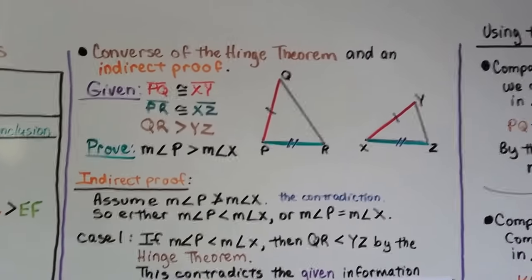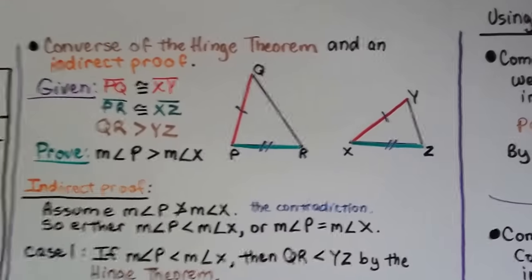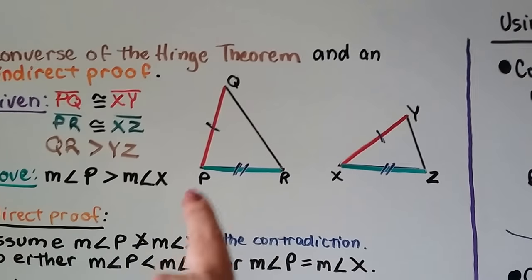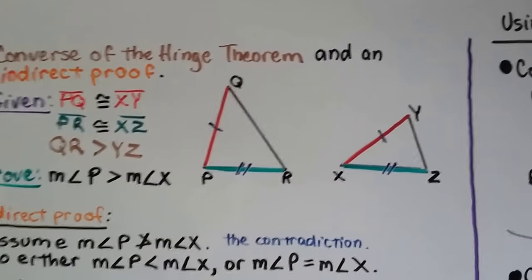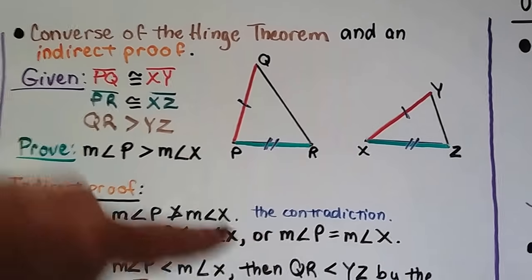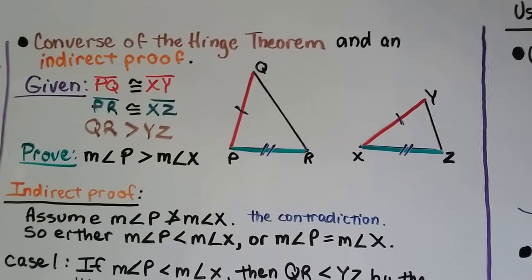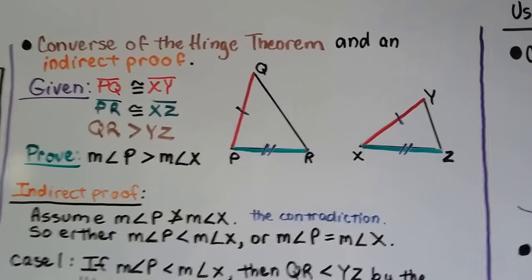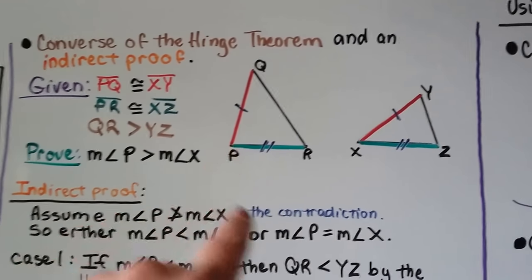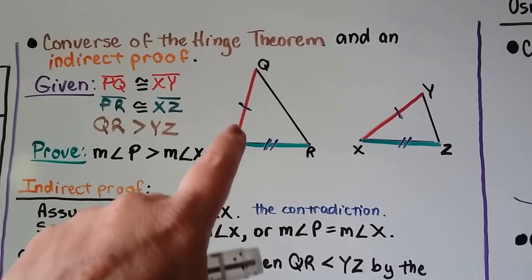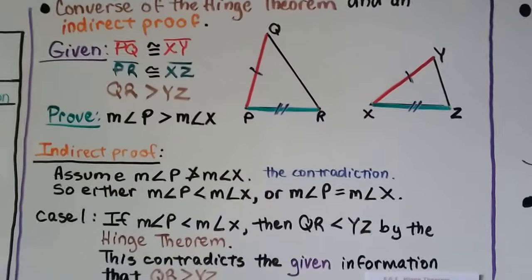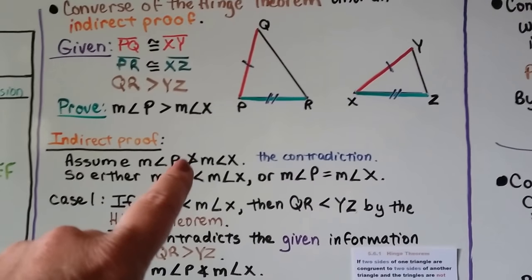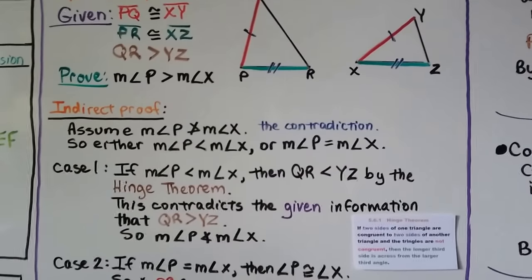Here's the Converse of the Hinge Theorem in an indirect proof. We have two triangles where red side PQ is congruent to red side XY, and green side PR is congruent to green side XZ. It's given that PQ is congruent to XY and PR is congruent to XZ, and also that QR is greater than YZ. We need to prove that the measure of angle P is greater than the measure of angle X. In our indirect proof, we assume the opposite — that the measure of angle P is not greater than the measure of angle X.